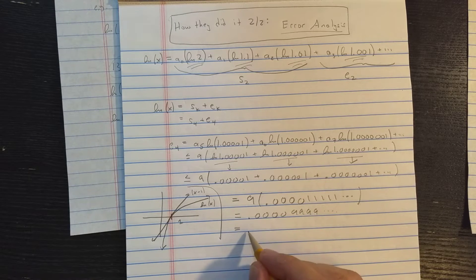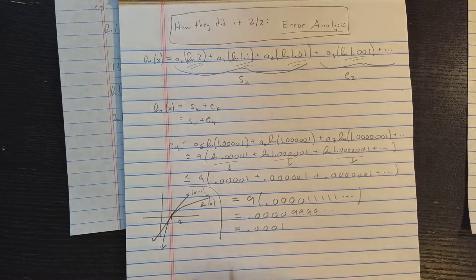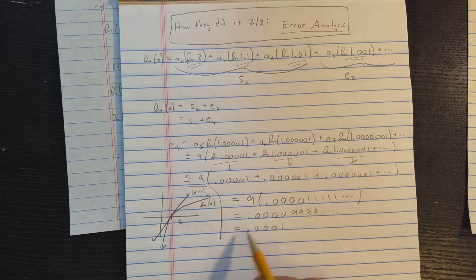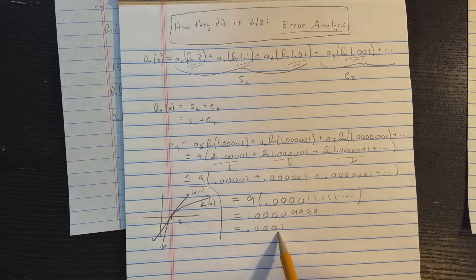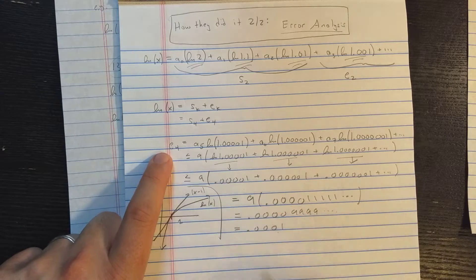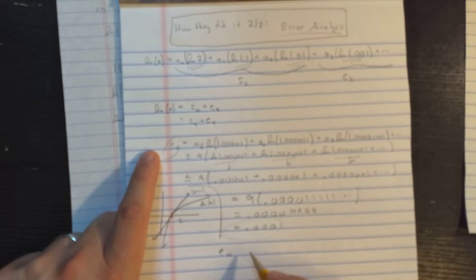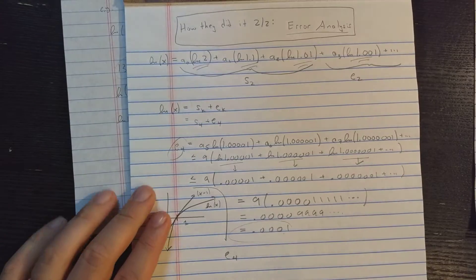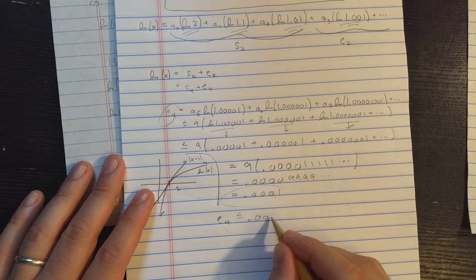And then this is the same as 0.0000099999, which is, of course, just 0.0001. Which is what we wanted to prove. Now, notice here, this is actually equal to this, which is equal to this, which is equal to this. But what I've shown here from beginning to end is that E4 is less or equal 0.0001.